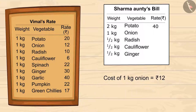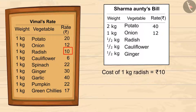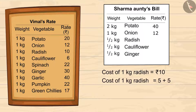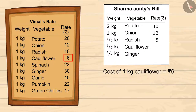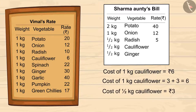1 kg of radish is 10 rupees, so half a kg will be 5 rupees. Adding 5 two times gives us 10, confirming the cost of half a kg of radish is 5 rupees. Similarly, if 1 kg of cauliflower costs 6 rupees, half of it will cost 3 rupees.